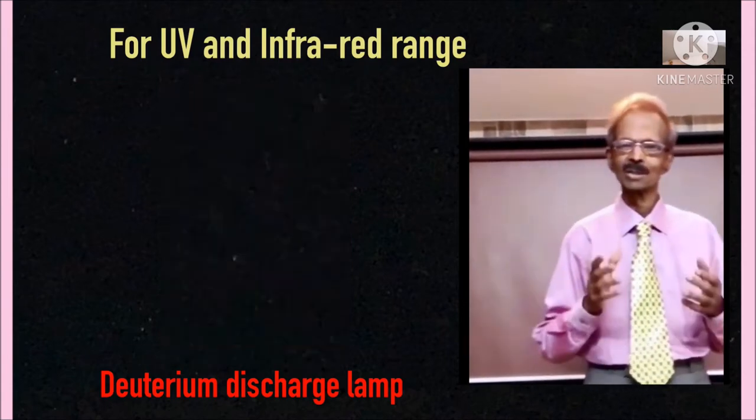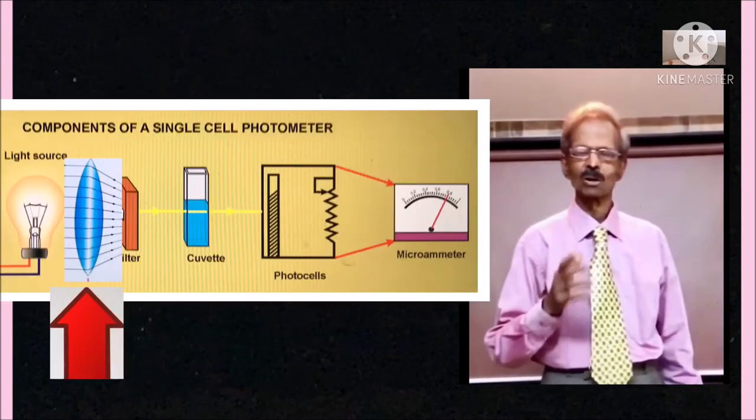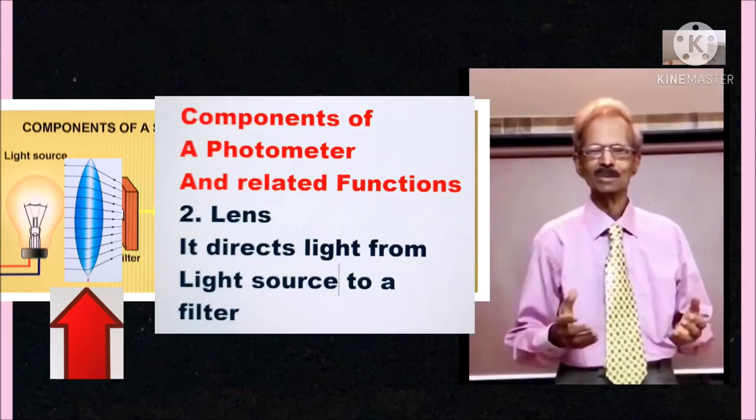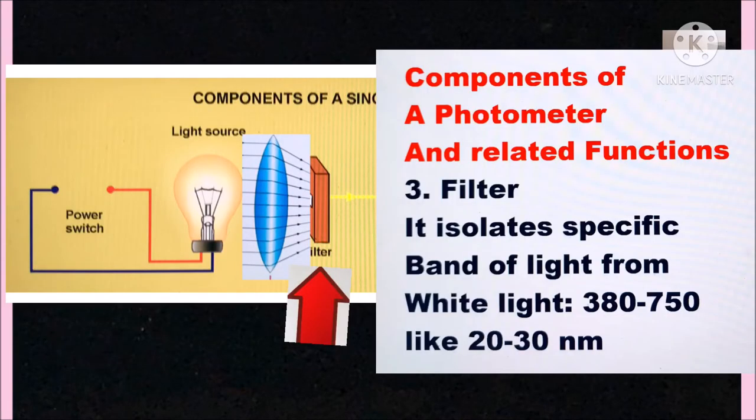Component 2: lens. A convex lens is used and it will focus the white light on a filter.